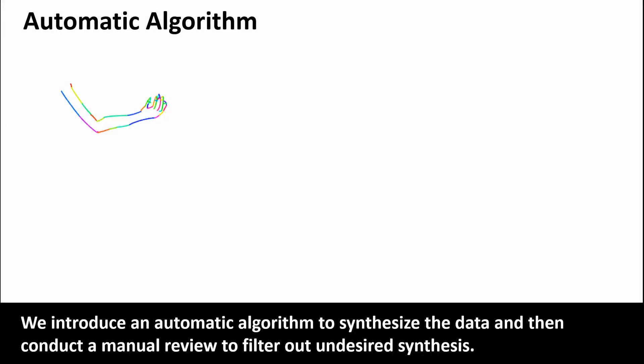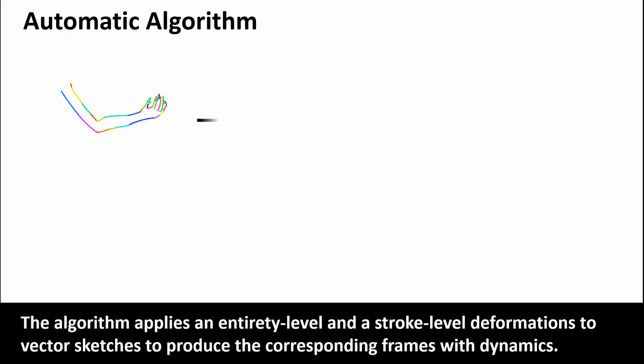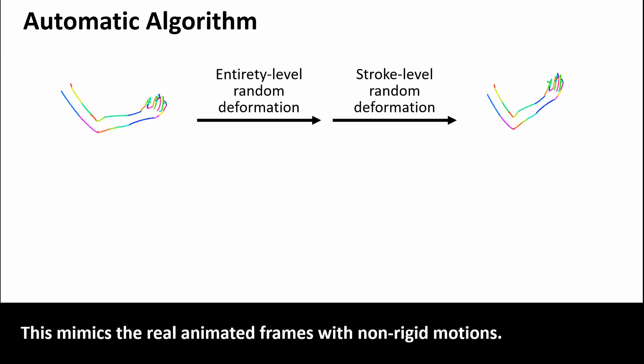We introduce an automatic algorithm to synthesize the data and then conduct a manual review to filter out undesired synthesis. The automatic algorithm applies an entirety-level and a stroke-level deformations to vector sketches to produce the corresponding frames with dynamics. This mimics the real animated frames with non-rigid motions.